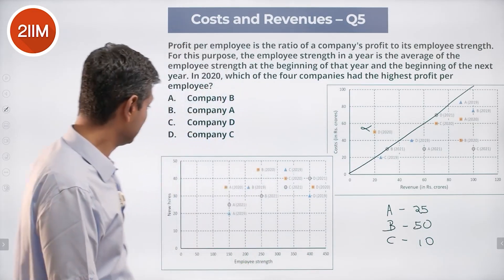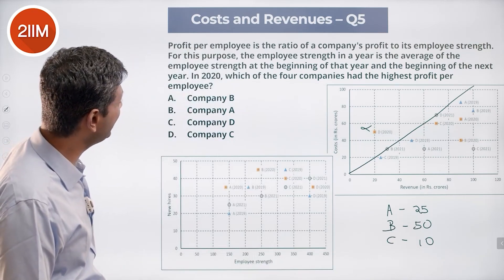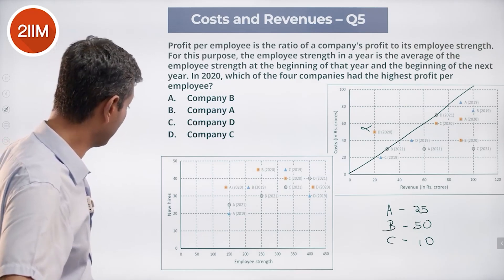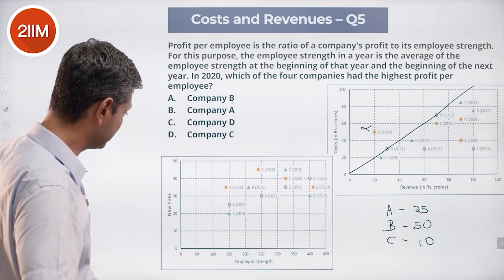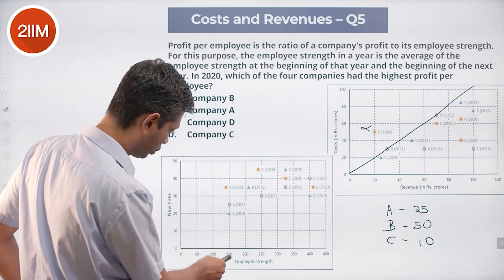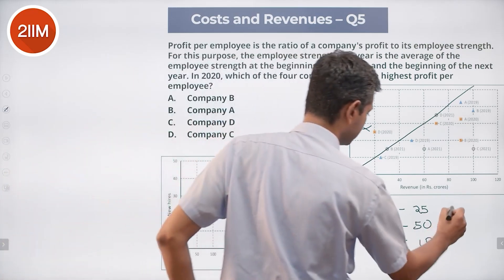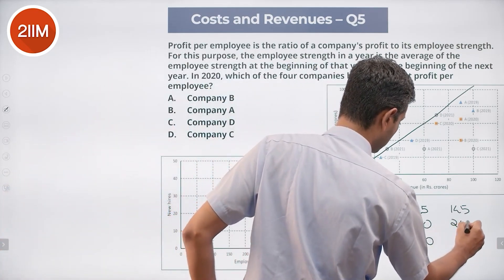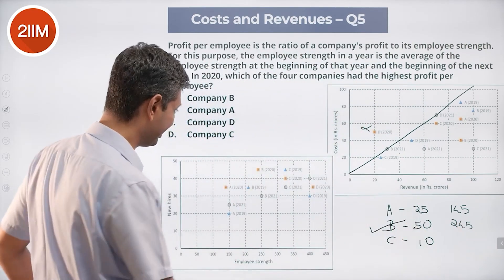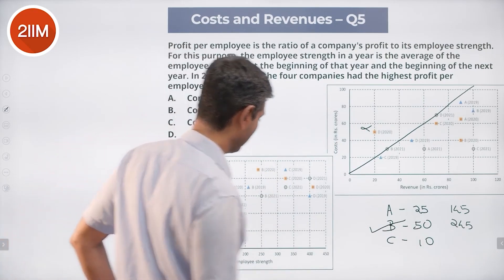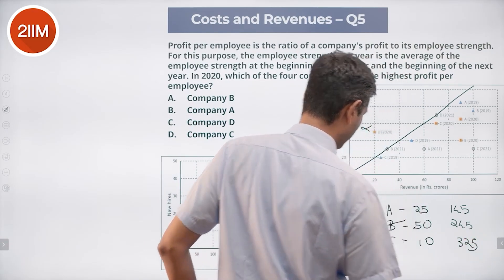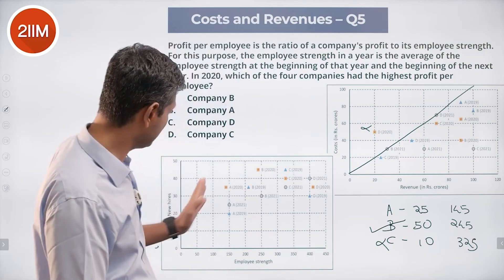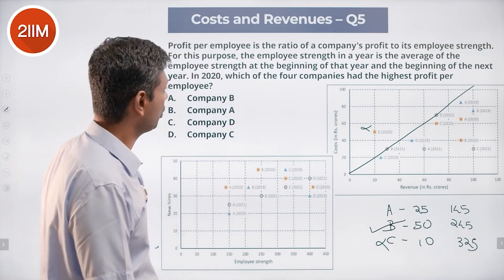For employee strength in 2020, we average beginning of 2020 and beginning of 2021. A: 150 and 140, average is 145. B: 250 and 240, average is 245. Even though B has more employees (245 versus 145 for A), B's profit is 50 crores versus A's 25 crores. B has roughly double the profit but not double the employees — so profit per employee is highest for B.